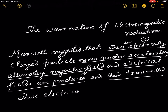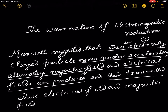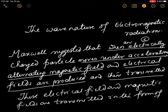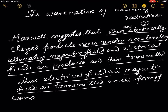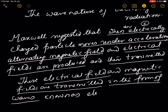These electrical field and magnetic fields are transmitted in the form of waves. These electrical fields are known as electromagnetic waves.